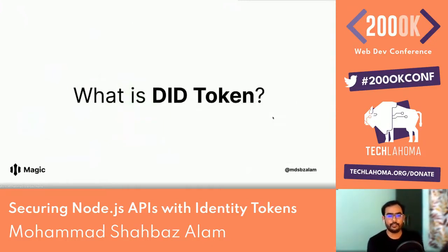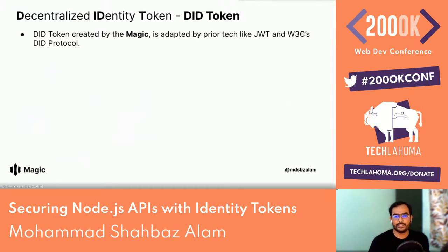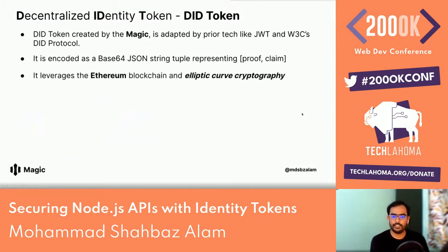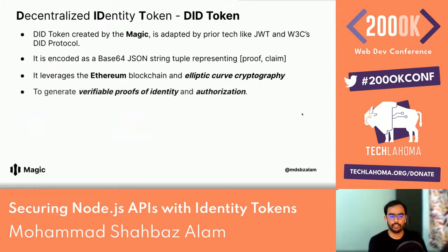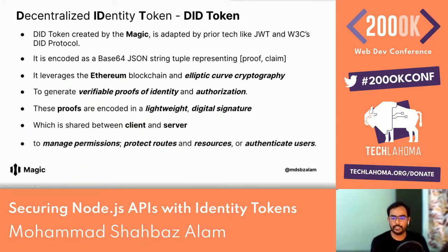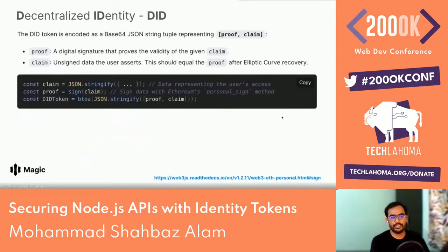So what is a DID token? The DID token created by Magic is adapted from prior technologies like JWTs and W3C's DID protocol. It encodes as a base64 JSON string tuple representing a proof and a claim. It leverages the Ethereum blockchain and elliptic curve cryptography to generate verifiable proofs of identity and authorization. These proofs are encoded in a lightweight digital signature shared between client and server.